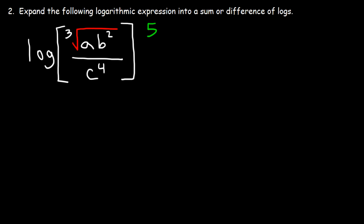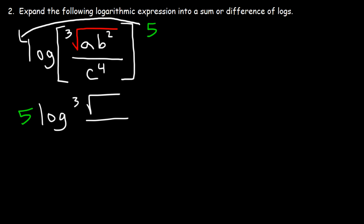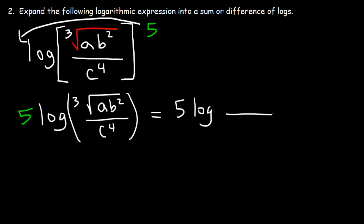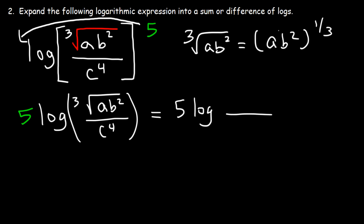Number two: expand the following logarithmic expression into a sum or difference of logs. The first thing we can do is move the five to the front. So this is going to be five log of the cube root of ab squared over z to the fourth. Now I'm going to rewrite this — I'm going to change the cube root of ab squared, which is equivalent to ab squared raised to the one third, and distribute the one third. So it's a to the one third, b to the two thirds, over z to the fourth.